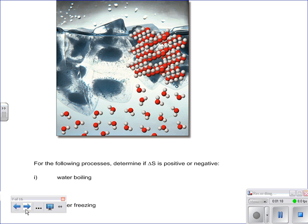And we come to this, which you see now in your notes. It says, for the following processes, determine if delta S is positive or negative. And so we just want to think about what's going on with water boiling - it's going to become more disordered.